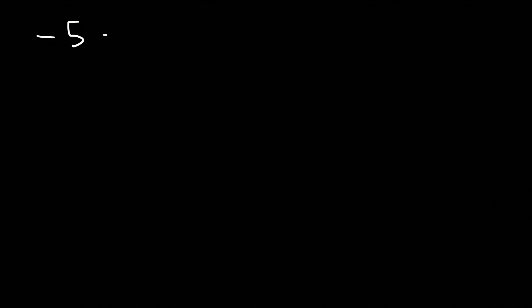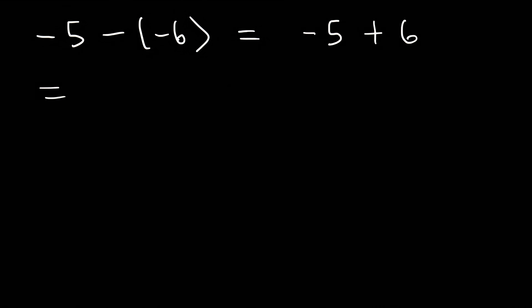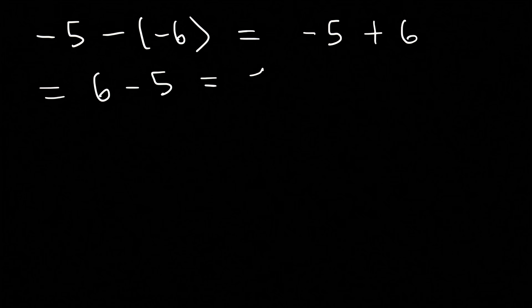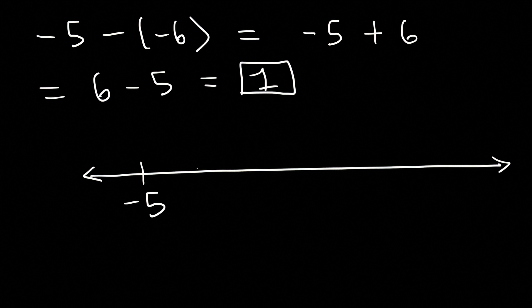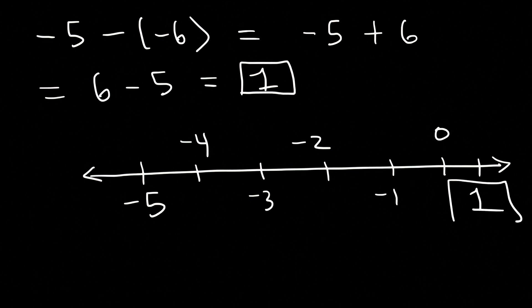Try a similar example: what's negative 5 minus negative 6? Convert the two negatives into a positive: negative 5 plus 6, which is the same as 6 minus 5 — that's positive 1. Using the number line, adding 6 to negative 5 takes you through negative 4, negative 3, all the way to positive 1.